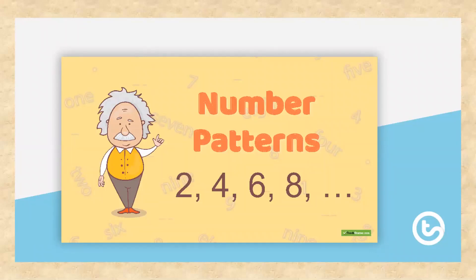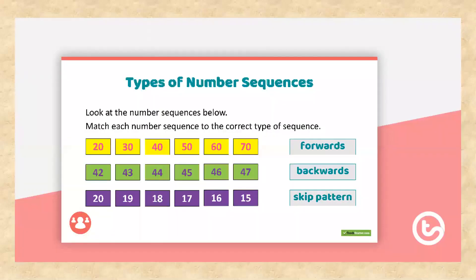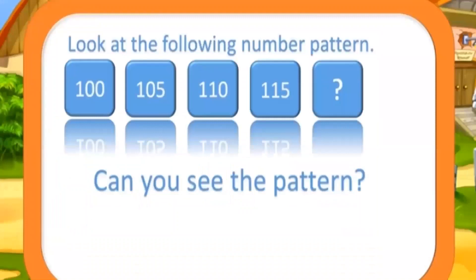Now we will learn about number patterns, which is very important — listen carefully. In number patterns there are different types of number sequences: forwards (ascending order), backwards (descending order), or skip patterns. It can be tables also, or there can be a difference of a few numbers — you have to identify it yourself using your thinking.